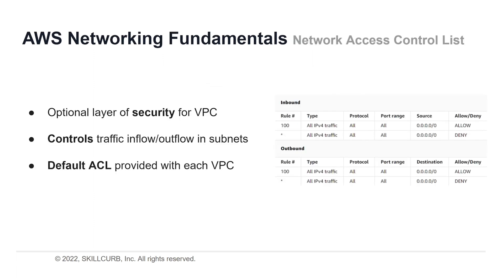A network access control list, or ACL, is an optional layer of security for your VPC that acts as a firewall for controlling traffic in and out of one or more subnets. You can set up network ACLs with rules similar to security groups to add an additional layer of security. Your VPC automatically comes with a modifiable default network ACL that allows all inbound and outbound IPv4 and IPv6 traffic by default. Each ACL also includes a deny-all rule (marked with an asterisk) that cannot be modified or removed.